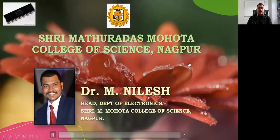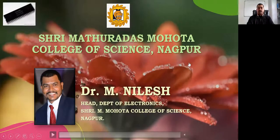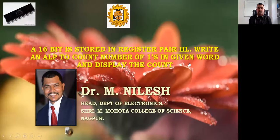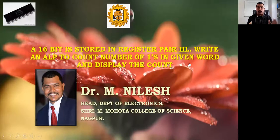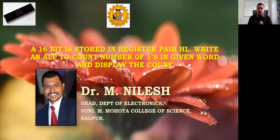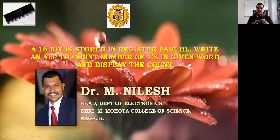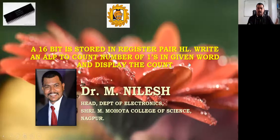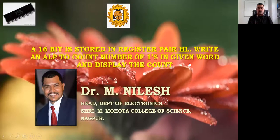Today we are going to study this program. A 16-bit number is stored in a register pair, and we have to write an assembly language program to count the number of ones in a given word and display the count. Displaying the count itself has a different program, so it is a very small program that can be written in the main program.